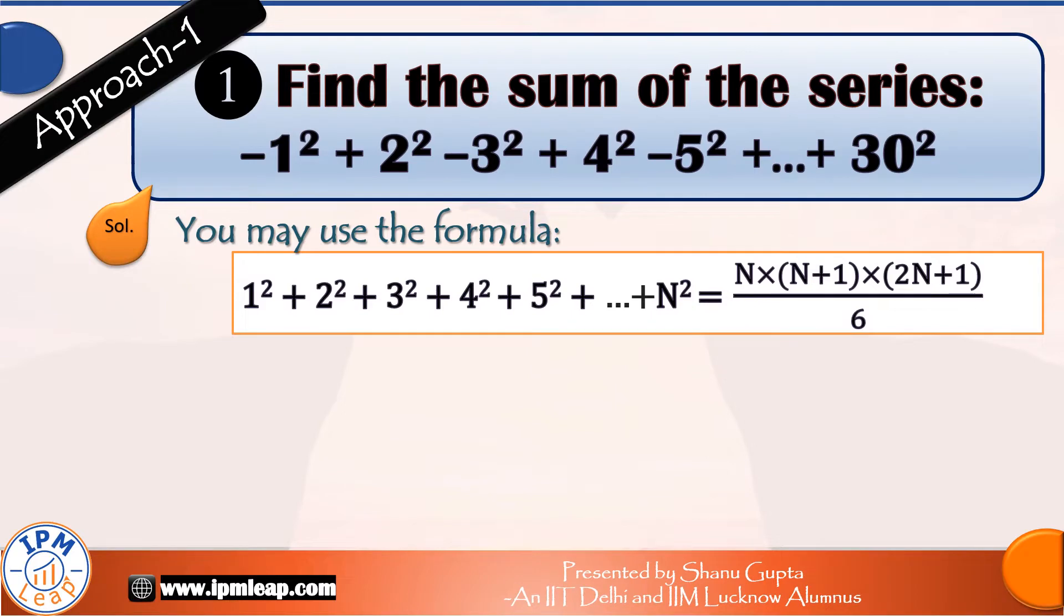Okay, so in our question we can see terms with alternating plus minus signs. So even though we have a formula for the sum of squares of first n natural numbers, we won't be able to apply it directly. We have to convert them all to the same sign first. So let's try to force all these terms into the same sign, the minus sign.